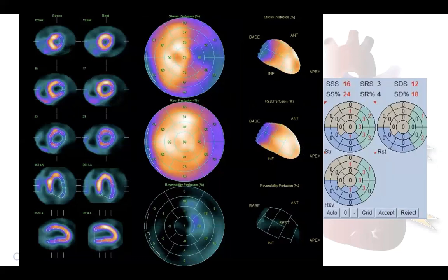But it's not enough, because we can quantify these perfusion abnormalities in a semi-quantitative way with a software that analyzes the amount of perfusion abnormalities compared to the peak of tracer uptake in one of the 17 segments of the bull's-eye. Here we found that the summed stress score is 16, which is more than 10% of the left ventricle. The summed rest score is 3, and the summed difference score is 12.